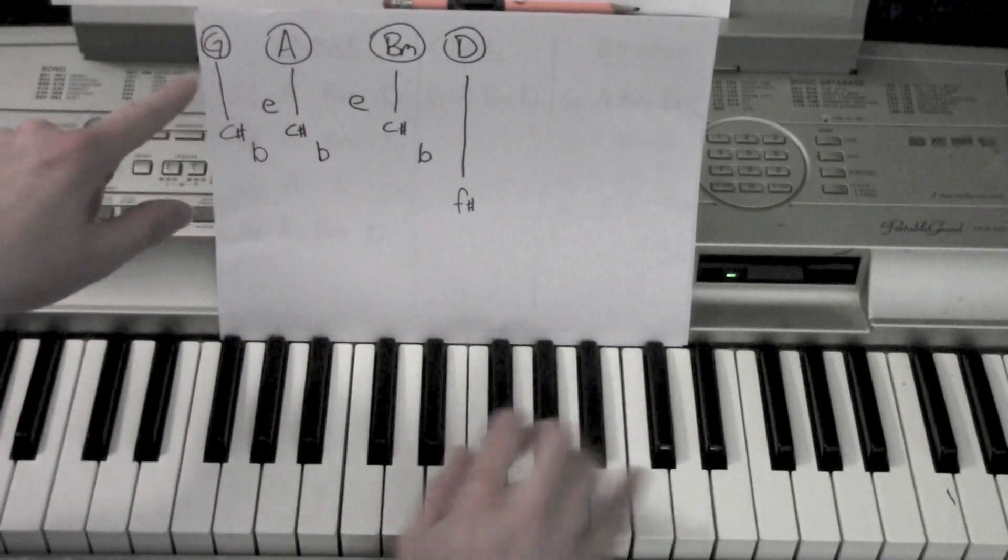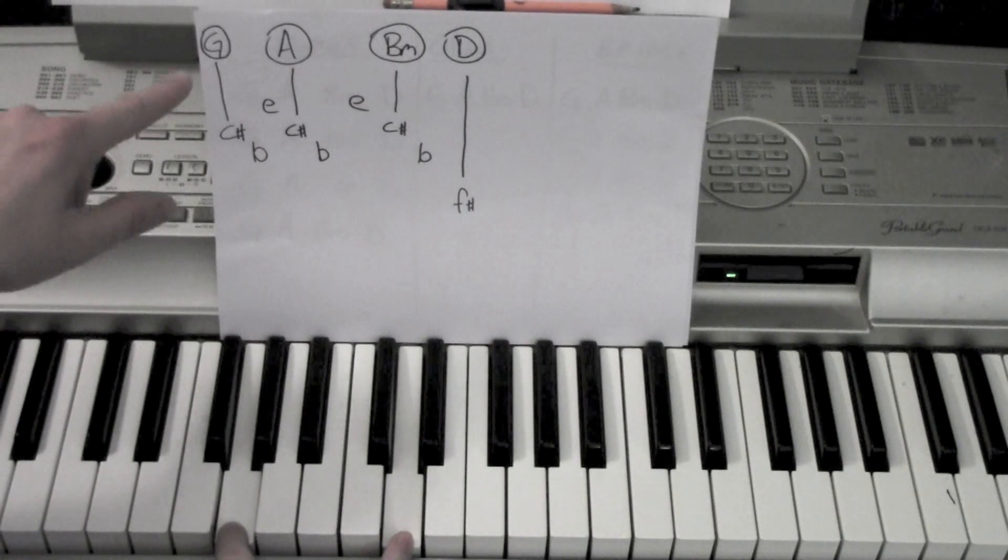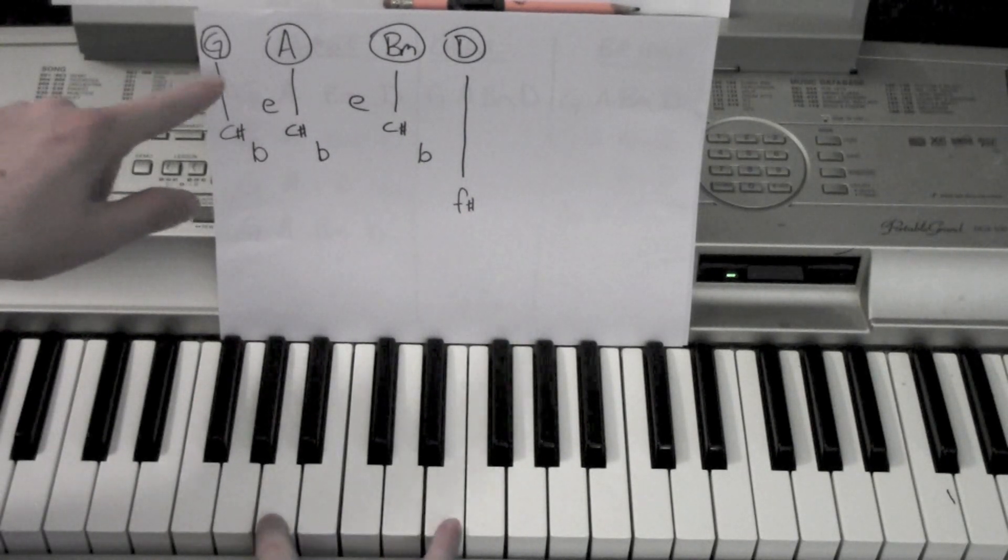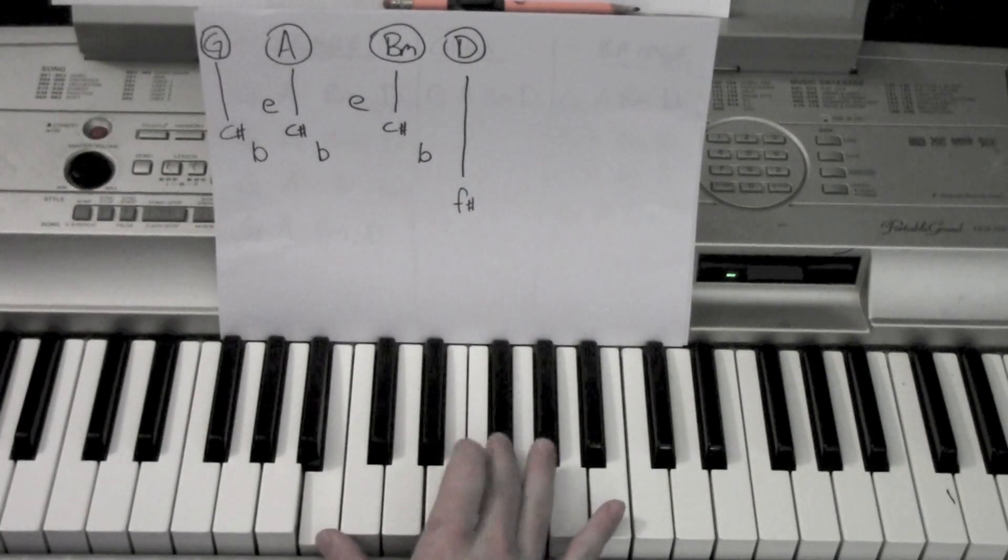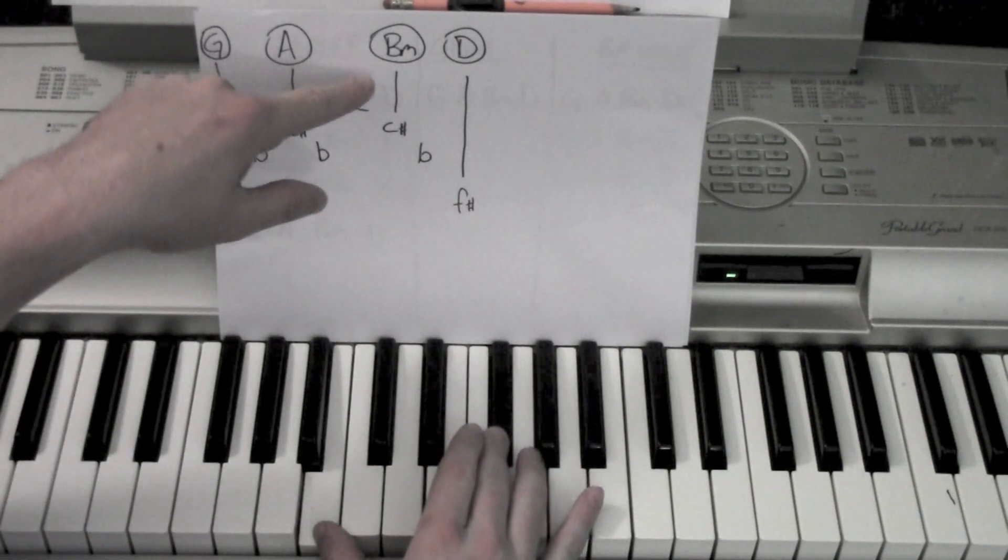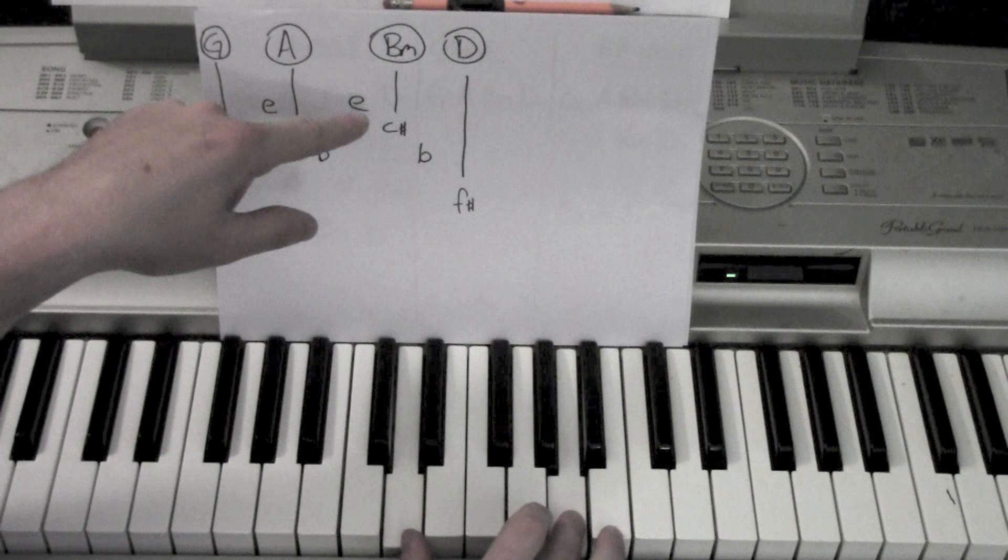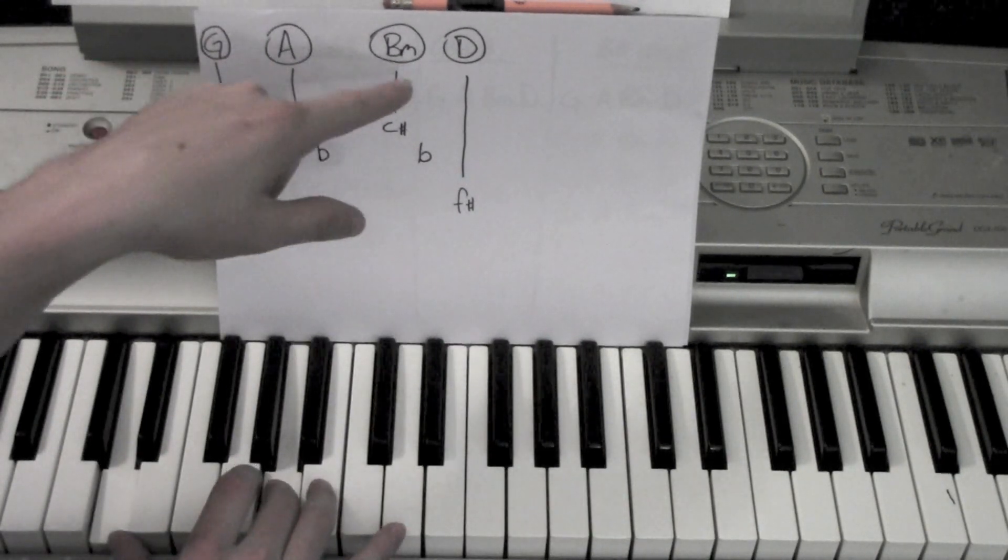Left hand, what I'm doing: for my G, I'm doing those two notes. For my A, I'm doing those two. For B minor, I'm playing those two, the B and the F sharp. And then for the D, I'm playing D and A, either there or I can bring it down there. Either one's fine.